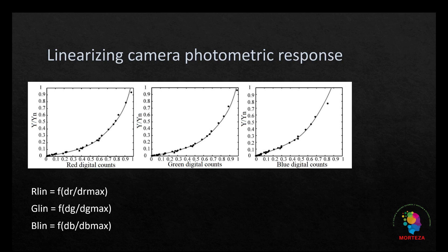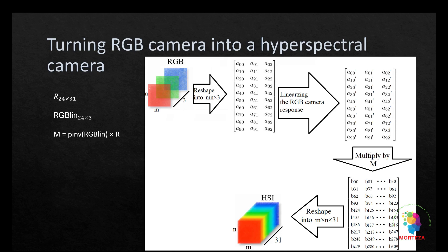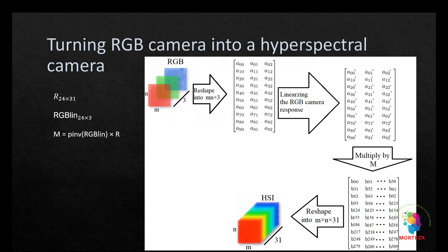The next thing is to linearize the camera photometric response. The linearized camera response for red, green, and blue channels are used in the process of spectral reflectance recovery using a simple set of inverse or linear regression methods. We have all the spectral reflectance information of the color chart in the visible part of the spectrum in matrix R, whose size is 24 by 31, where 24 refers to the 24 patches of the Macbeth color checker and 31 refers to spectral reflectance data from 400 to 700 nm at 10 nanometer intervals. We also have a matrix of size 24 by 3 containing the linearized RGB camera response, shown by RGB_lin. Using the following equation we obtain a matrix M, which transfers RGB color data to the spectral reflectance data, where M is estimated via pseudo-inverse.